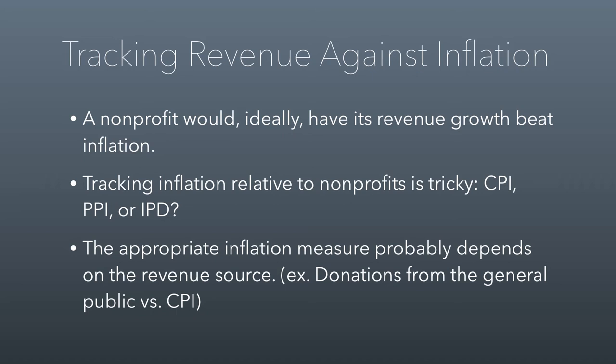So it's worth tracking revenue against inflation — something that a lot of nonprofits aren't sophisticated enough to do, even though it's not that hard. Ideally, a nonprofit would have its revenue growth beat inflation; your income year after year needs to be growing faster than inflation, otherwise you're slowly losing money. One of the hard questions is which inflation measure to use. We'll talk about the CPI — the Consumer Price Index — the PPI — the Producer Price Index — and the IPD — the Implicit Price Deflator. CPI is used for consumer goods, PPI for producer goods, and IPD for government agencies. There's no inflation measure created specifically for nonprofits, so you have to pick the one best suited for your activities. If you rely heavily on donations, you'd probably want to use CPI, because consumers are the ones giving you money and they're facing inflation as measured by the CPI.